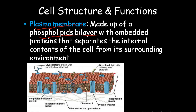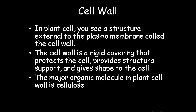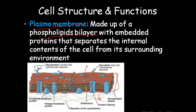The plasma membrane has phospholipid on the inside and outside of the cell forming the membrane. In the case of plants, the external structure of the plasma membrane — also called the cell wall — is much more rigid and protects and provides structural support to the cell. It consists of an organic molecule called cellulose.